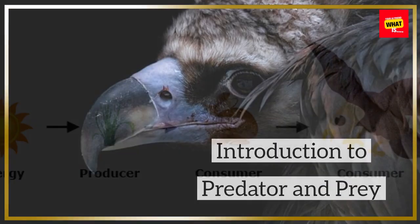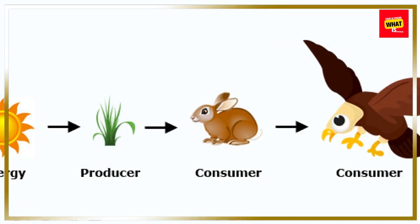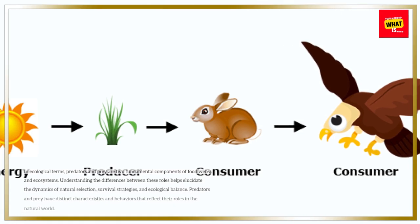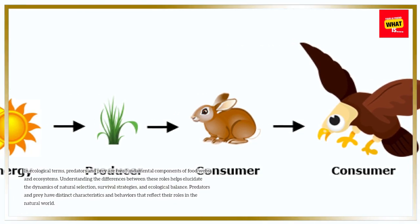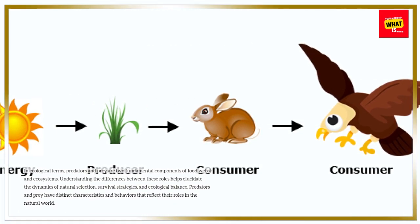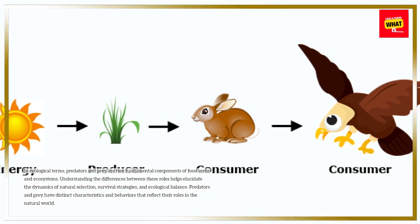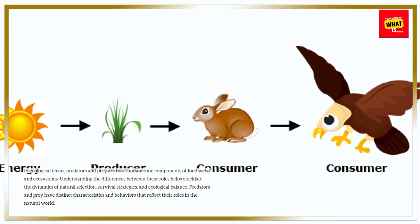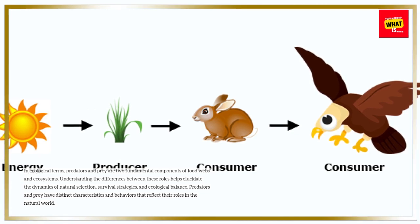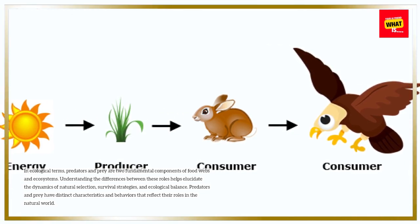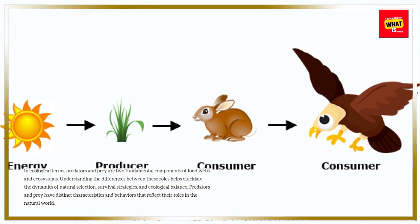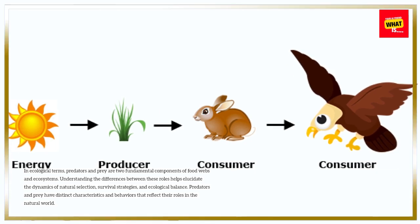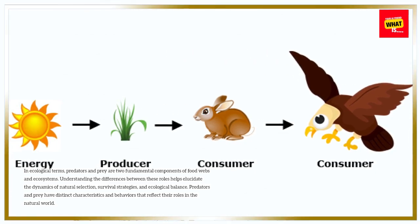Introduction to Predator and Prey. In ecological terms, predators and prey are two fundamental components of food webs and ecosystems. Understanding the differences between these roles helps elucidate the dynamics of natural selection, survival strategies, and ecological balance. Predators and prey have distinct characteristics and behaviors that reflect their roles in the natural world.